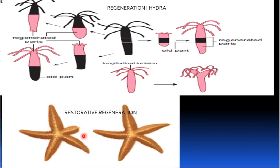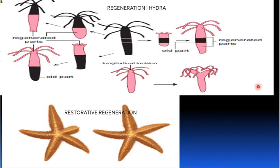The example for restorative regeneration is starfish and the tail of a lizard. In the starfish, one arm is cut and it regrows. The severed body part regenerating is called restorative regeneration. Reparative regeneration is when damaged tissue regenerates.